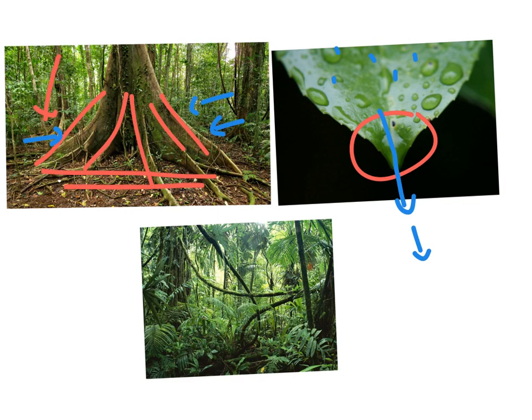Also in the rainforest we have various different types of plants. The biodiversity is very high. There are the lianas, which are the vine-like plants, and these often grow around tree trunks, feeding off the tree trunks.